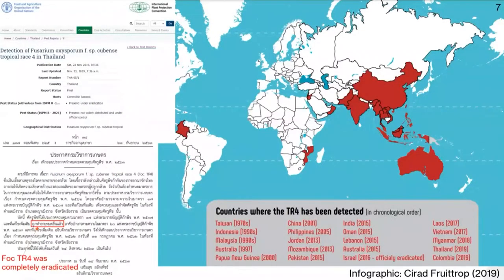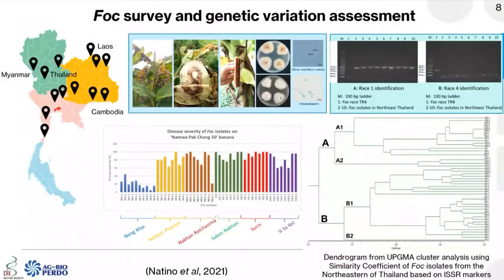In Thailand, FOC Race 4 was detected in a confined area in Chiang Rai province in November 2019. At that time, the Department of Agriculture, Thailand, had an emergency plan to restrict and eradicate the disease. In August 2020, the Department of Agriculture announced that FOC Race 4 was completely eradicated and absent from the country. Although it was eradicated, we have to remain aware and monitor the risk of Fusarium in Thailand.